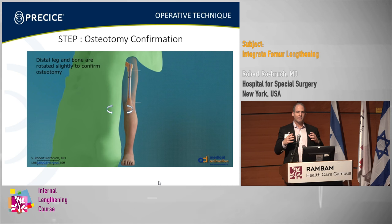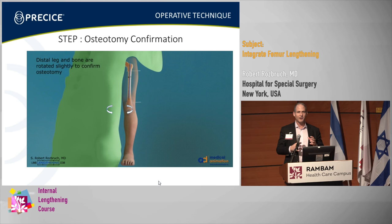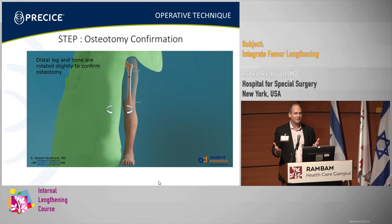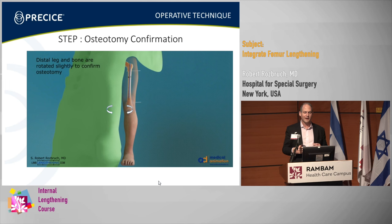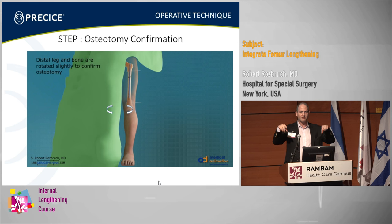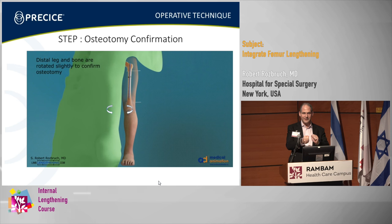The question always is how much do you complete your osteotomy. You want to do it just the right amount — you don't want to displace the osteotomy so much that you have trouble passing the nail, but you don't want to do an incomplete osteotomy either. I try to minimize displacement, because as soon as I pass the nail, since I have my rotational markers, I tend to rotate around the nail — and that gives me the feeling that I have completed my osteotomy.